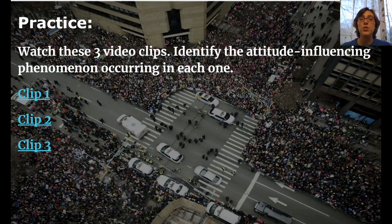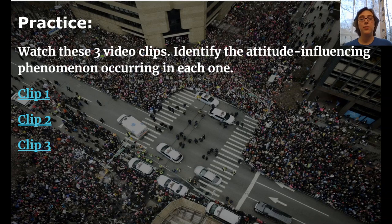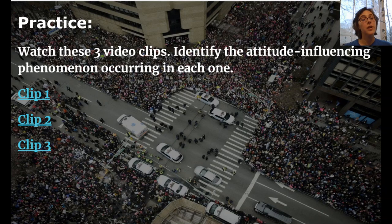At this point, pause the video and go watch the three clips — the links are on slide number 18 of the notes attached to this assignment in Google Classroom. Go to slide 18 and click on the different video clips. As you watch them, try to identify which attitude-influencing phenomenon we've just learned is occurring in each one. Now that you've watched the clips, the correct answers are in the notes on slide 18, written there for which clip corresponds to which phenomenon.